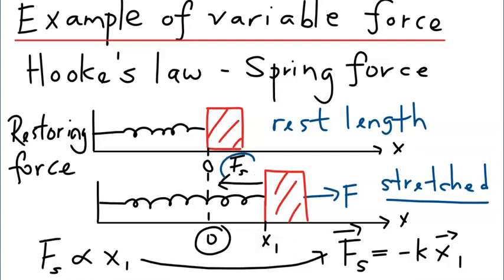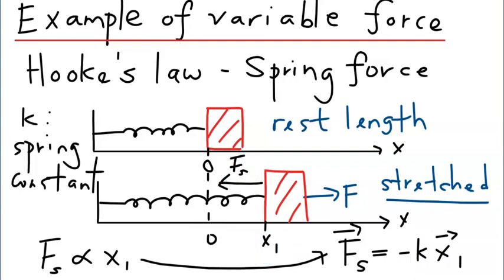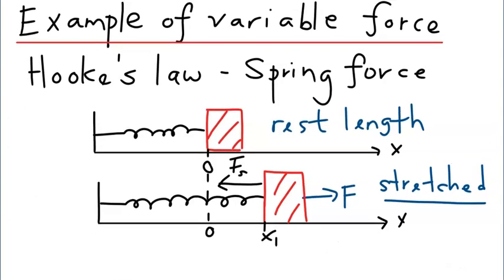Because the direction of the spring force and the direction of displacement (heading to the right) are opposite to each other, there is a negative sign. The constant K is called the spring constant of the spring. It has units of newtons per meter, and the larger the spring constant K, the harder it will be to stretch the spring.